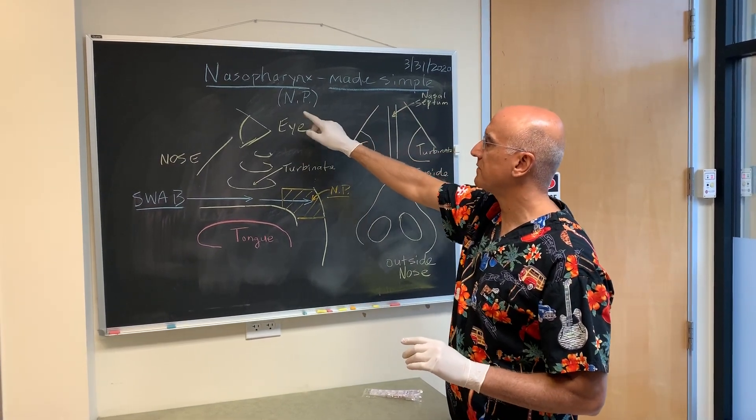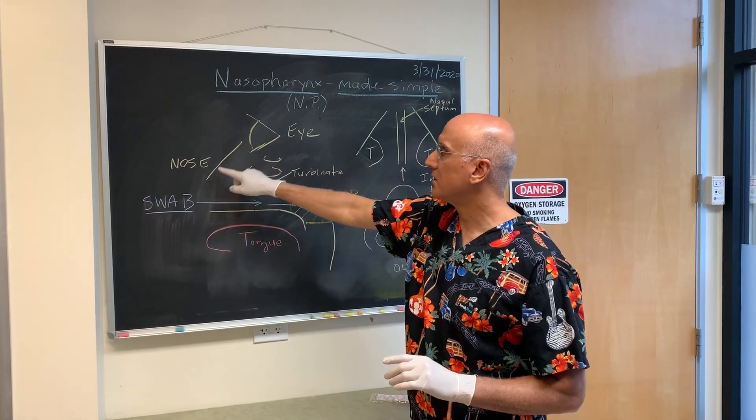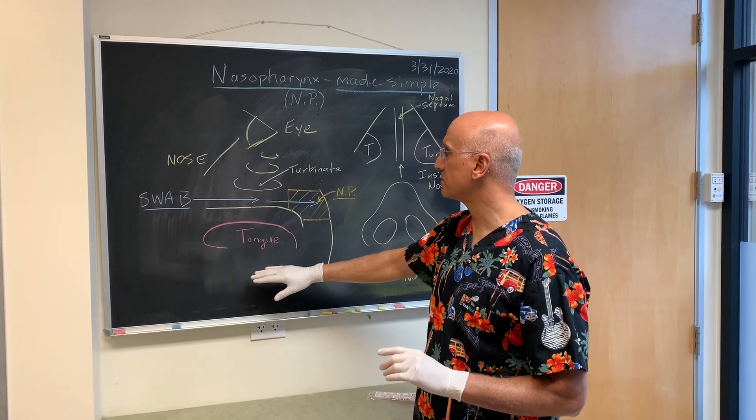So we call it NP for nasopharynx. This is a cross section of the face so this would be the eye, the outside of the nose, this is the inside of the nose, this is your tongue and the chin of course would be here.